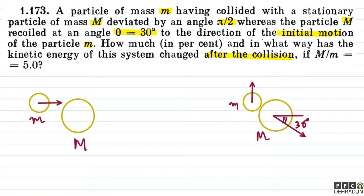Let us understand these two diagrams. In this question, there is a particle small m that has collided with a particle of capital M. The deviation is 90 degrees for small m. And capital M recoiled at an angle theta equal to 30 degrees to the direction of the initial motion of the particle.